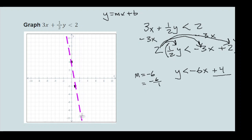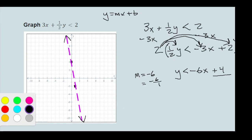We put arrows on the ends of the line. Because it's a strict inequality, the line is dashed — it does not include points on the line. Now I'm going to test a point. I'm going to test (0, 0). Whenever I can use (0, 0), I do. I'll substitute it into the equation to see if it works.